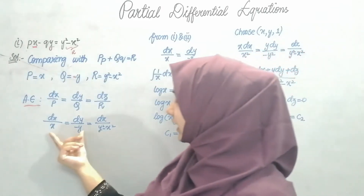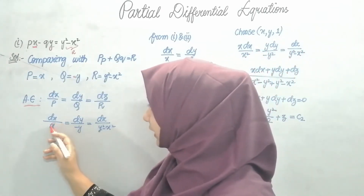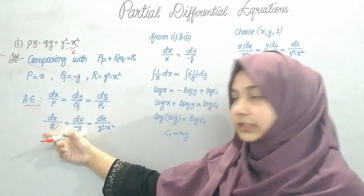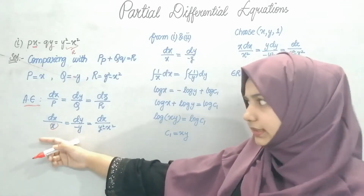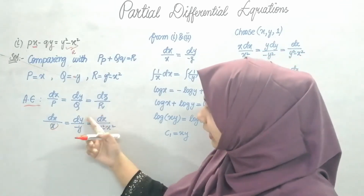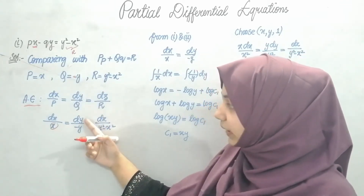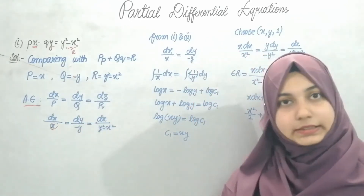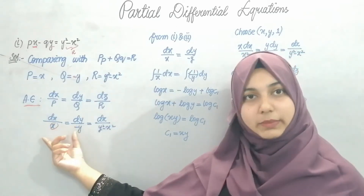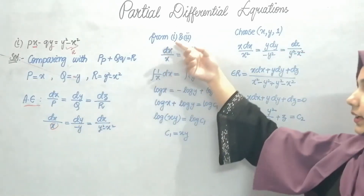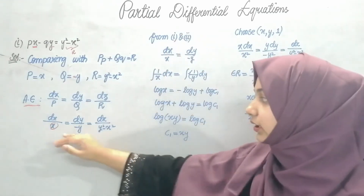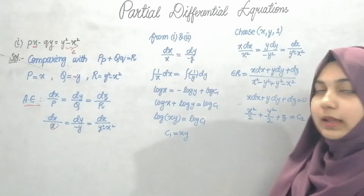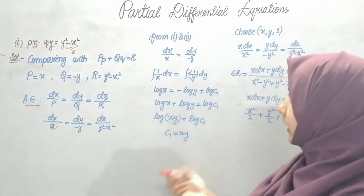If I take the first two terms, I only have an x term to integrate with respect to x, and only a y term to integrate with respect to y — so yes, it's possible. I'll apply method of grouping. From equations 1 and 2, I'll equate: dx/x equals dy/(minus y).